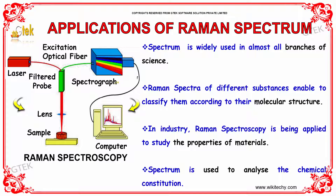This spectrum is used to analyze chemical constitutions. The sample is used via a lens, and the spectrometer is used. Laser is passed through here. This is your Raman spectroscopy setup, and the spectrograph is visualized here on the computer. This is how we are able to analyze the molecular structure, and this is a major usage of Raman spectrum.